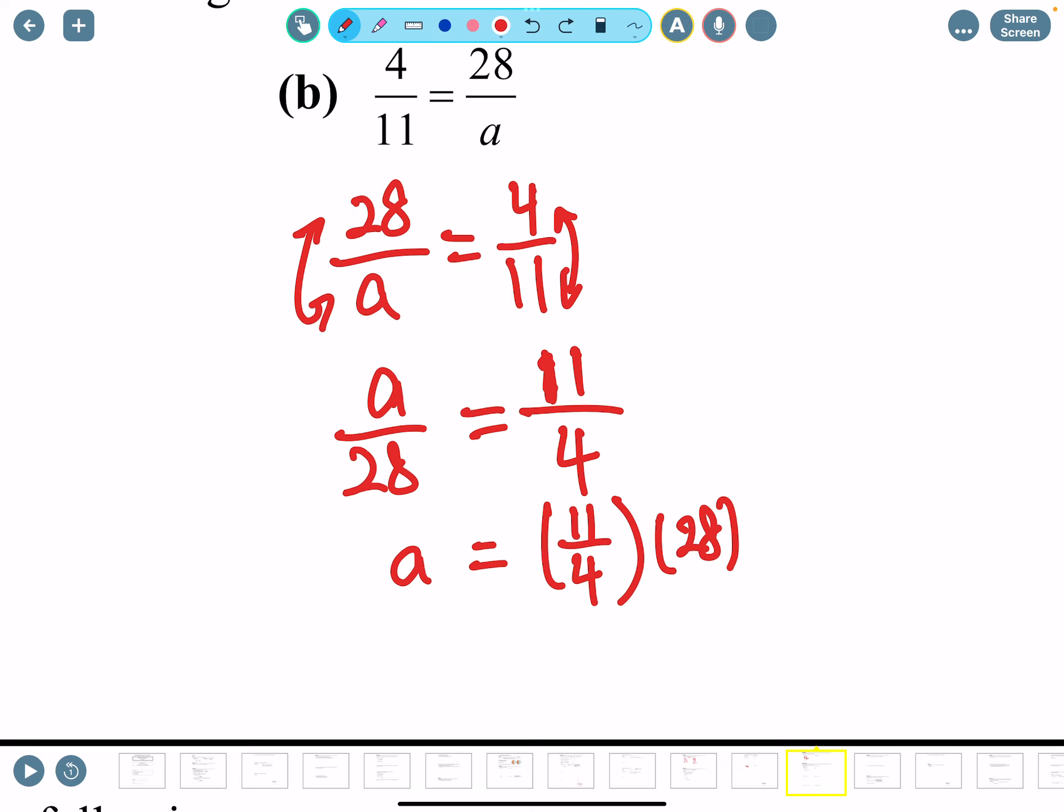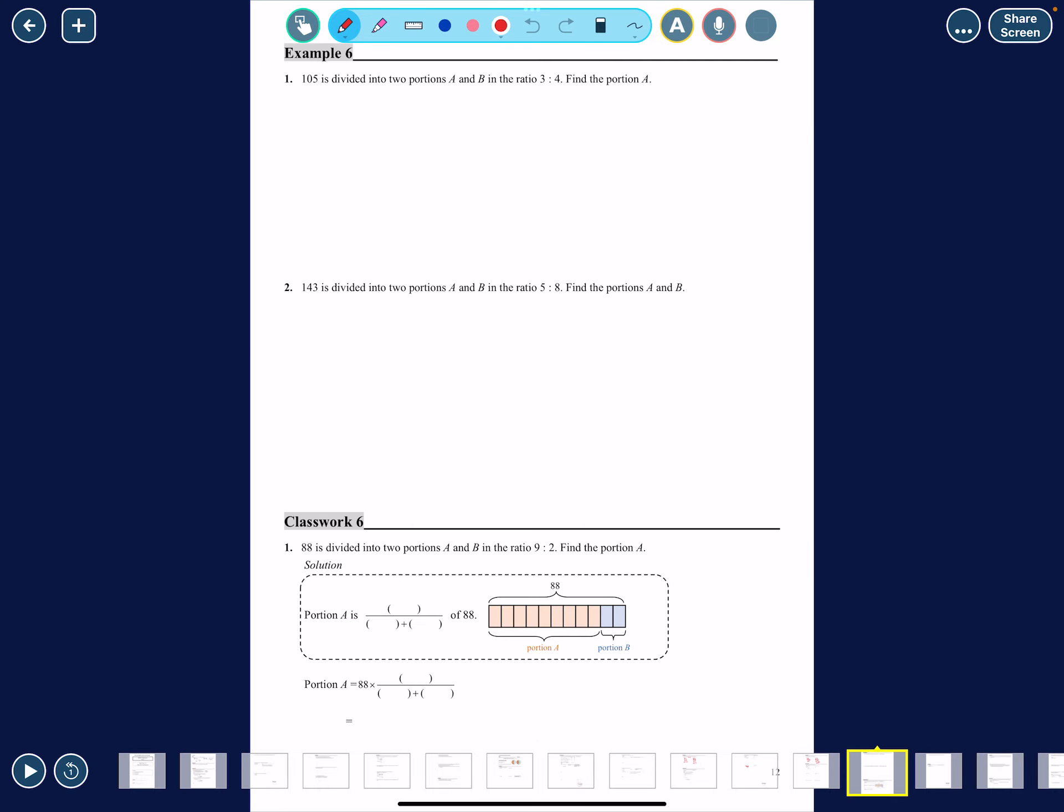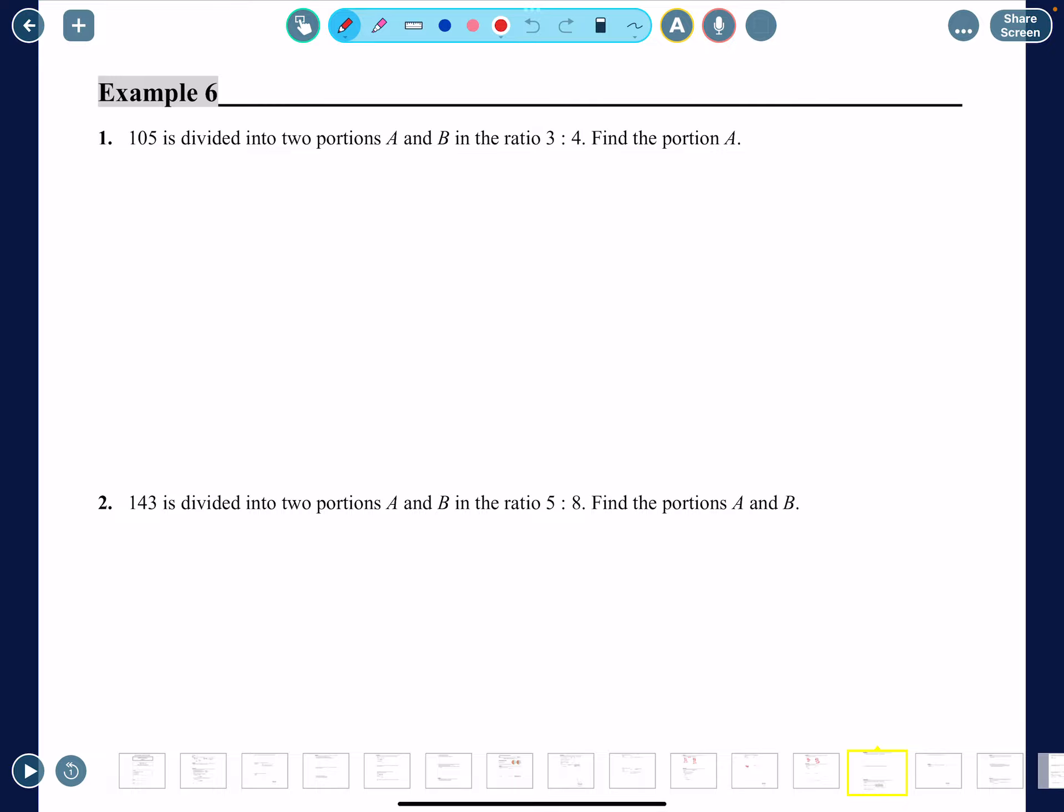Now let's calculate this: 11 times 28 divided by 4 is 77, so we have a equals to 77. Okay, that's another type kind of question. The last one is solving a kind of like real life problem.